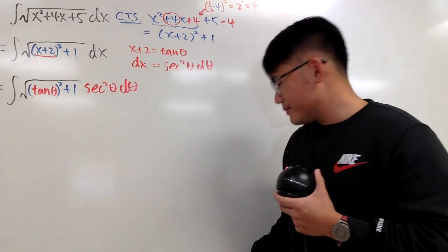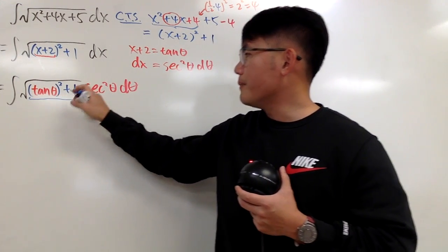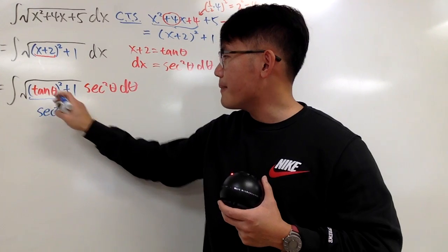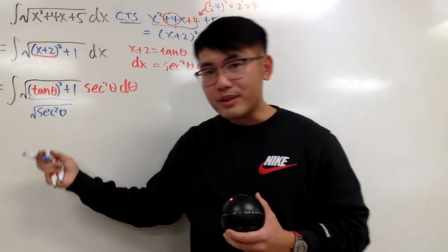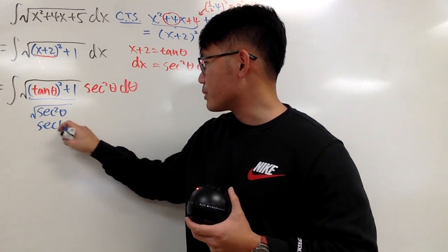And now, what's this inside? Put this down in blue again. This right here, as I said earlier, this is just secant square theta in the square root though. And of course, square square root in this situation, we'll just look at this as secant to the first power theta.